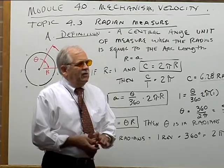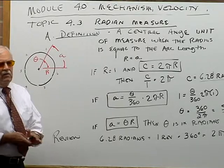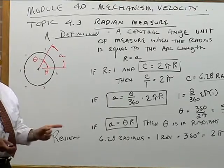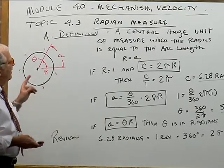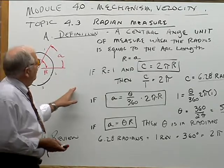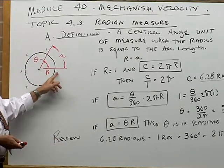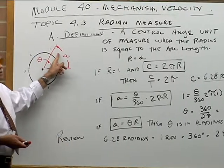Now, as you know, a radian is a central angle measurement, and it's based on the premise that the radius of the circle is equal to an arc length.